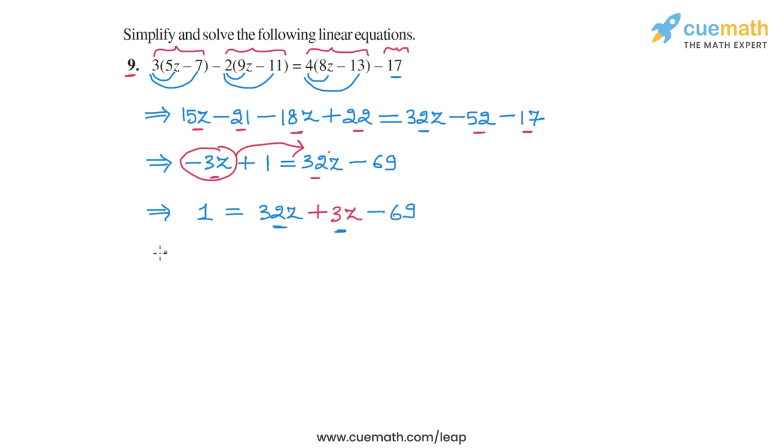32z plus 3z is 35z. So we get 1 is equal to 35z minus 69.